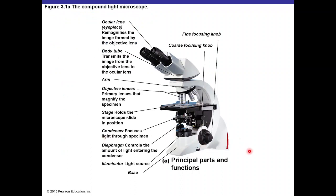Compound light microscopes have mechanical and optical parts. The optical parts are the ocular lens, condenser lens, and objective lenses. The mechanical parts include the body or tube, the arm, the base, and various devices that control focusing of the specimen.